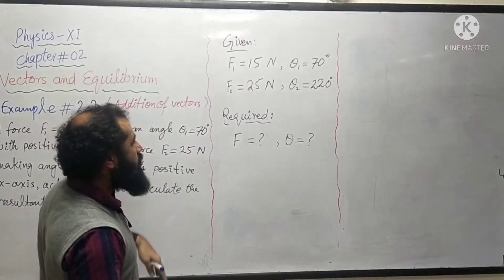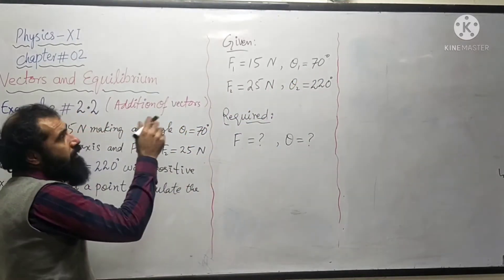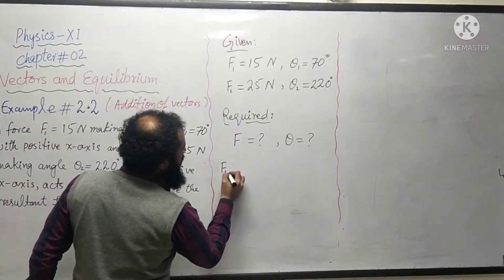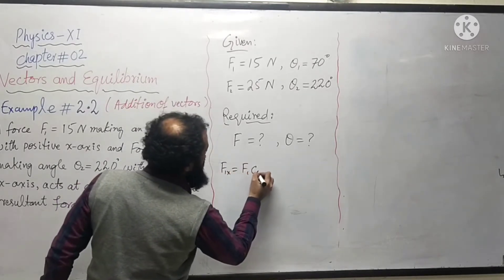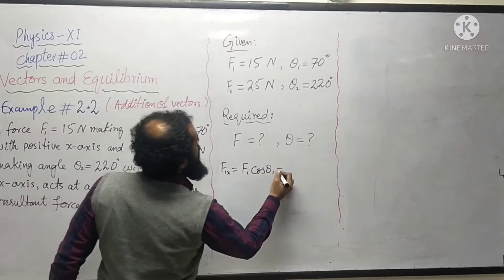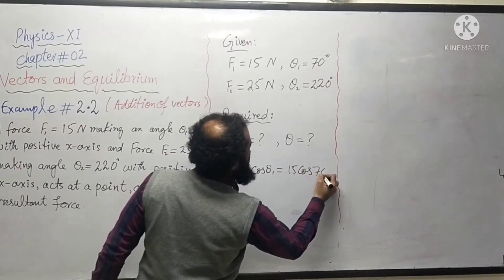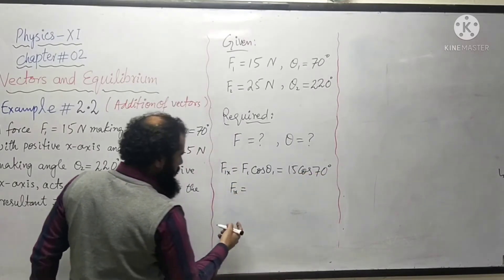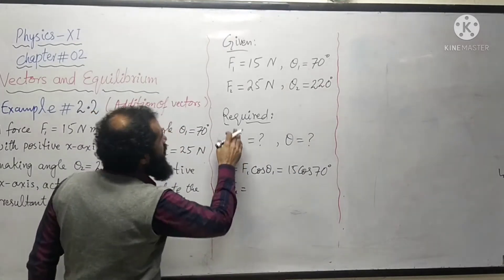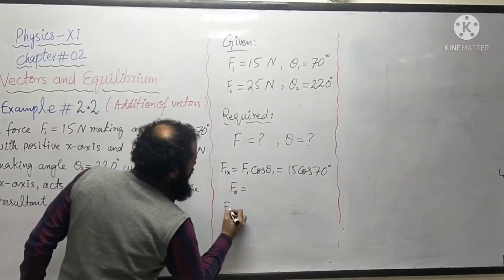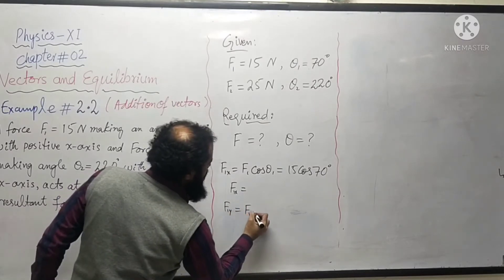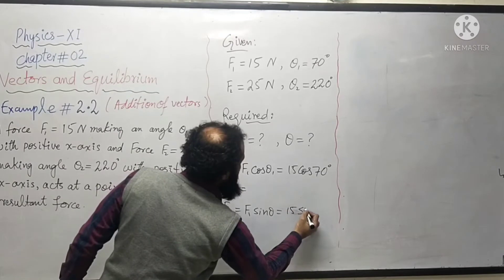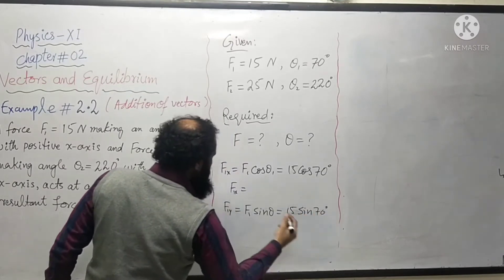First we find the components of the first vector. The x-component is F1 cos theta-1, which is 15 times cos 70 degrees, giving us F1x. The y-component is F1 sin theta-1, which is 15 times sin 70 degrees, giving us F1y.